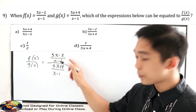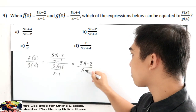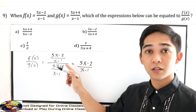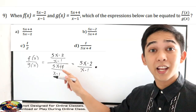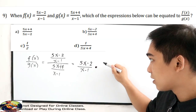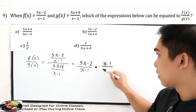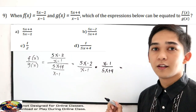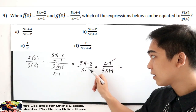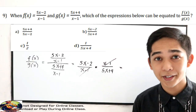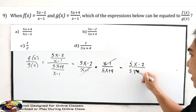We have a rational expression in our numerator. Copy 5x minus 2 all over x minus 1. Since this is a division, we proceed to multiplication, then get the reciprocal of our denominator. The reciprocal of our denominator is x minus 1 all over 5x plus 4. Now let us use the cancellation method. We can cancel x minus 1 with x minus 1. Our final answer is 5x minus 2 all over 5x plus 4.